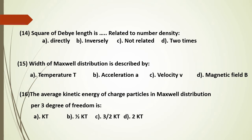For the Debye length derivation: lambda_D = 69 × sqrt(T/n). Taking the square on both sides, lambda_D squared equals 69 squared times T over n, so lambda_D squared becomes inversely proportional to density n.